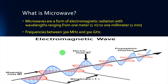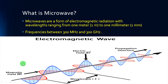So what is microwave? Microwaves are a form of electromagnetic radiation with a wavelength ranging from 1 meter to 1 millimeter. Microwave frequencies lie between 300 MHz to 300 GHz. This is a typical electromagnetic wave — it contains a magnetic field as well as an electric field. The red color wave indicates the magnetic field whereas the blue color wave indicates the electric field, making it a combination of electrical field and magnetic field.